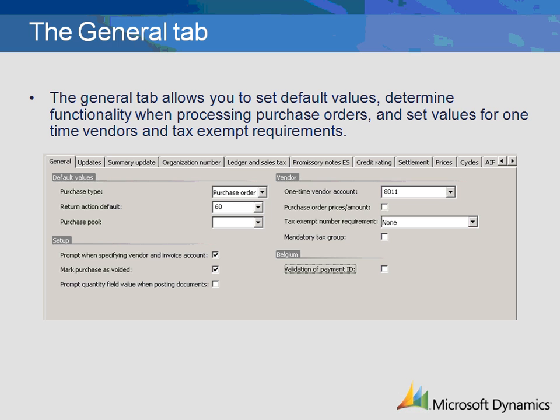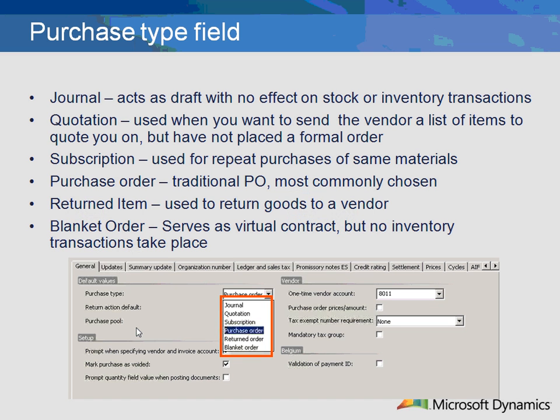Let's begin with the Default Purchase Type field. Within the Purchase Type field, you want to select a default purchase order type. This type will automatically populate the Purchase Order Type field when creating new purchase orders. Let's review the options and identify the most commonly selected default type. Journals act as a draft and quotations are used as a method to receive a quote. These do not execute real purchase orders.